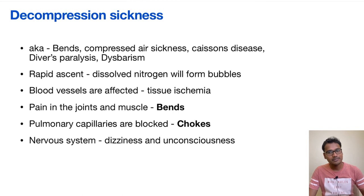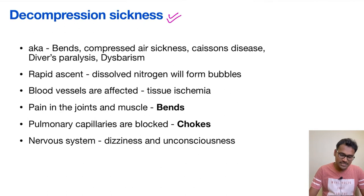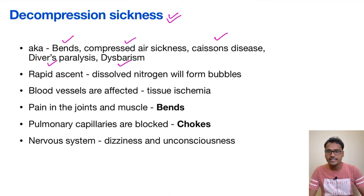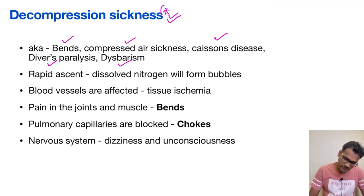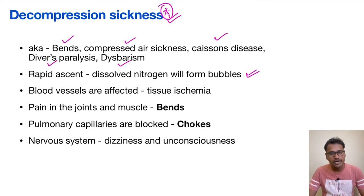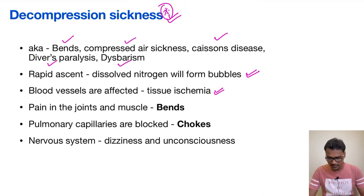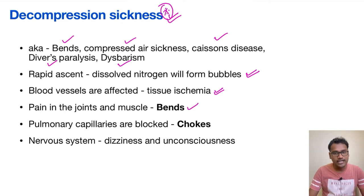Whenever a person rapidly ascends to the surface, it causes decompression sickness, also known as bends, compressed air sickness, caisson's disease, diver's paralysis, or dysbarism. On rapid ascent, dissolved nitrogen forms bubbles. Nitrogen forms more bubbles than other gases because it is more abundant. These bubbles can block any blood vessel in the body, causing tissue ischemia. When they cause pain in the joints and muscles, this is referred to as bends.